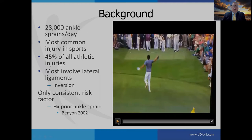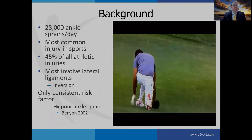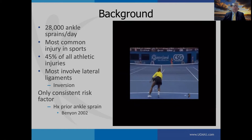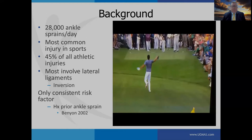In the United States, there are over 28,000 ankle sprains reported each day, and it's considered the most common injury in sports, with 45% of all athletic injuries occurring to the ankle. Most involve the lateral ligaments with a mechanism of inversion, and the only consistent risk factor identified is a prior history of ankle sprain.